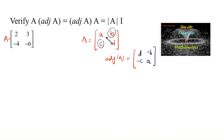So for this matrix, adjoint of A is obtained by interchanging -6 and 2, and changing the sign of the remaining elements 3 and -4, giving us [[-6, -3], [4, 2]].